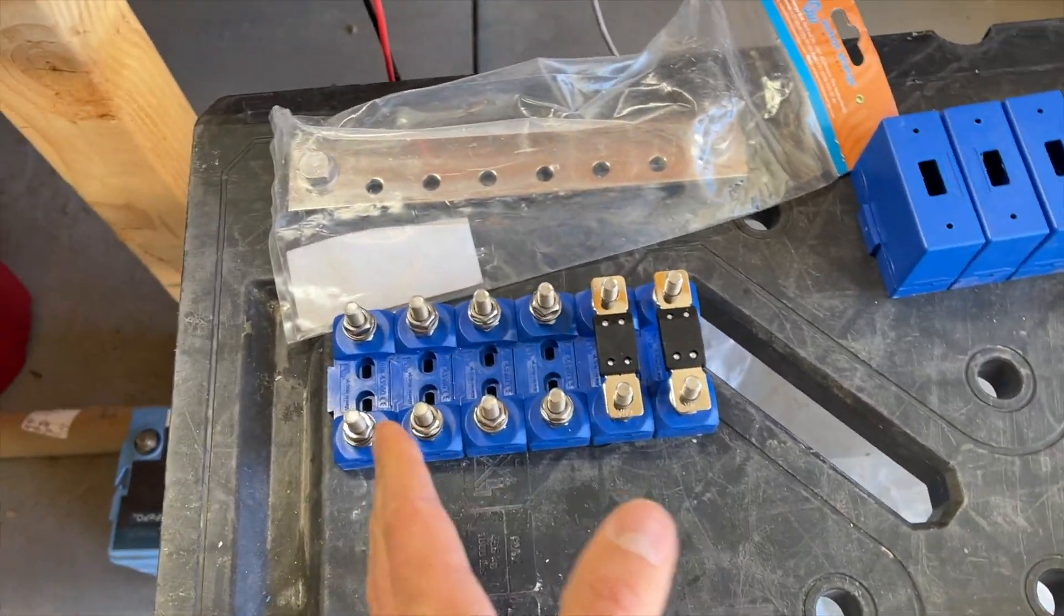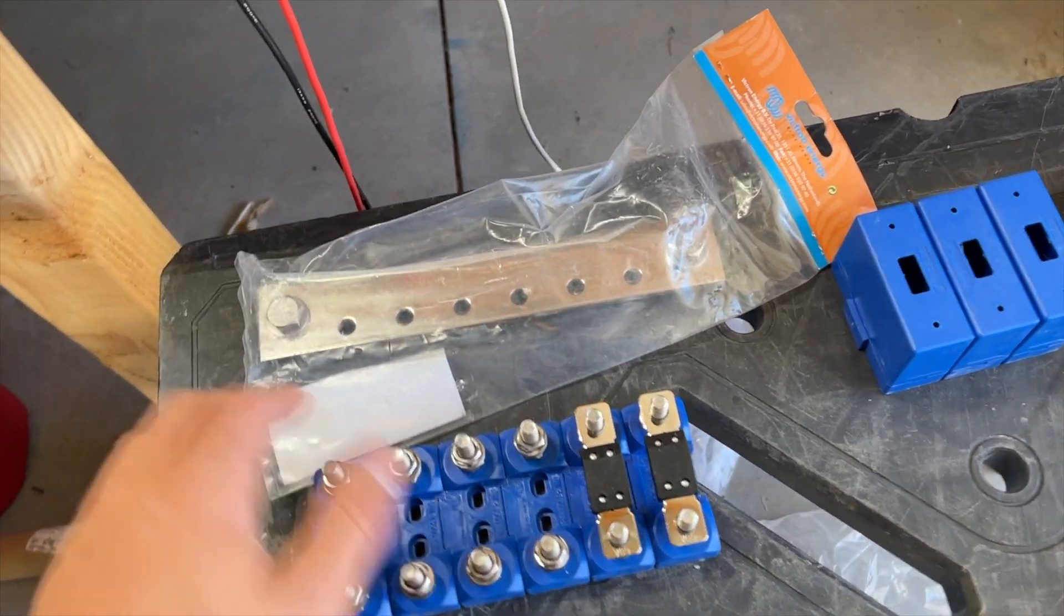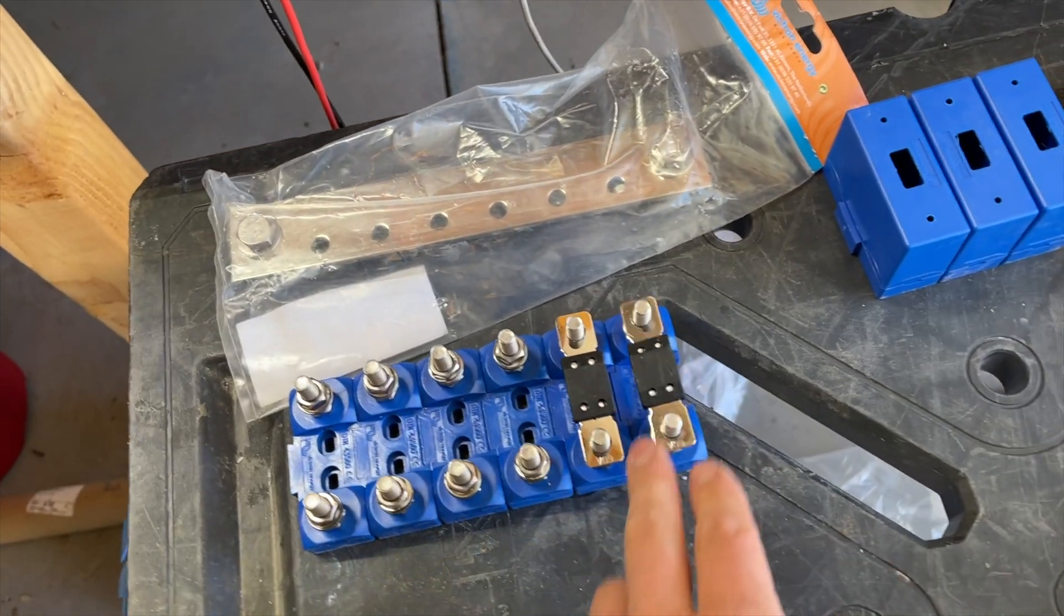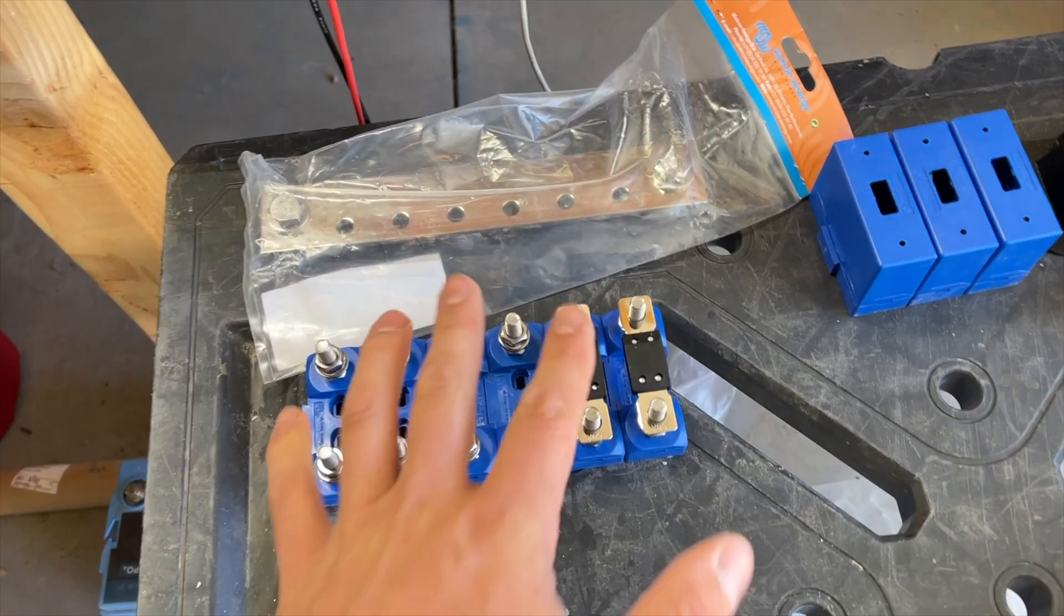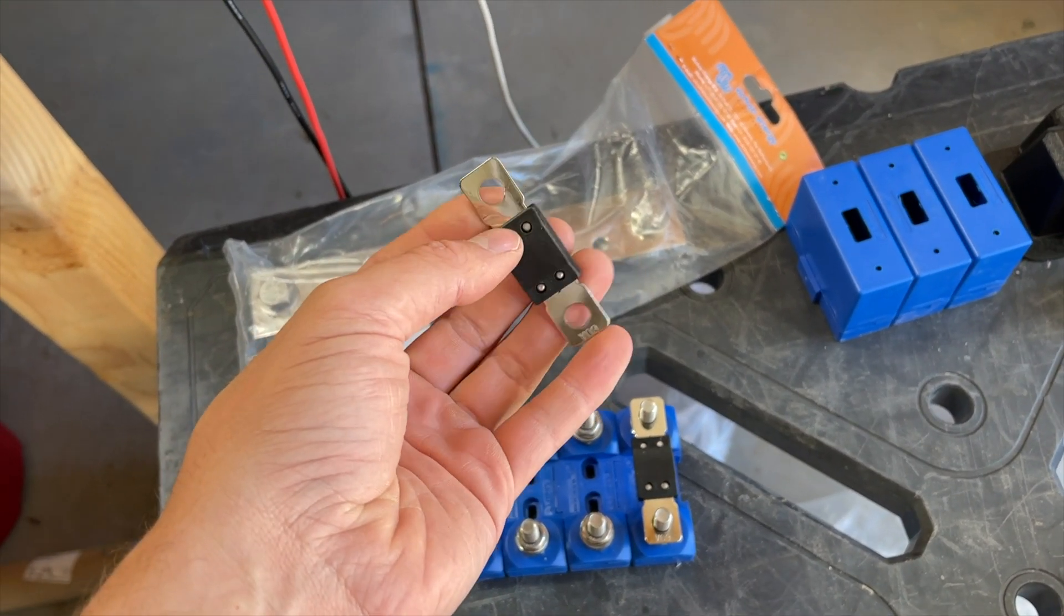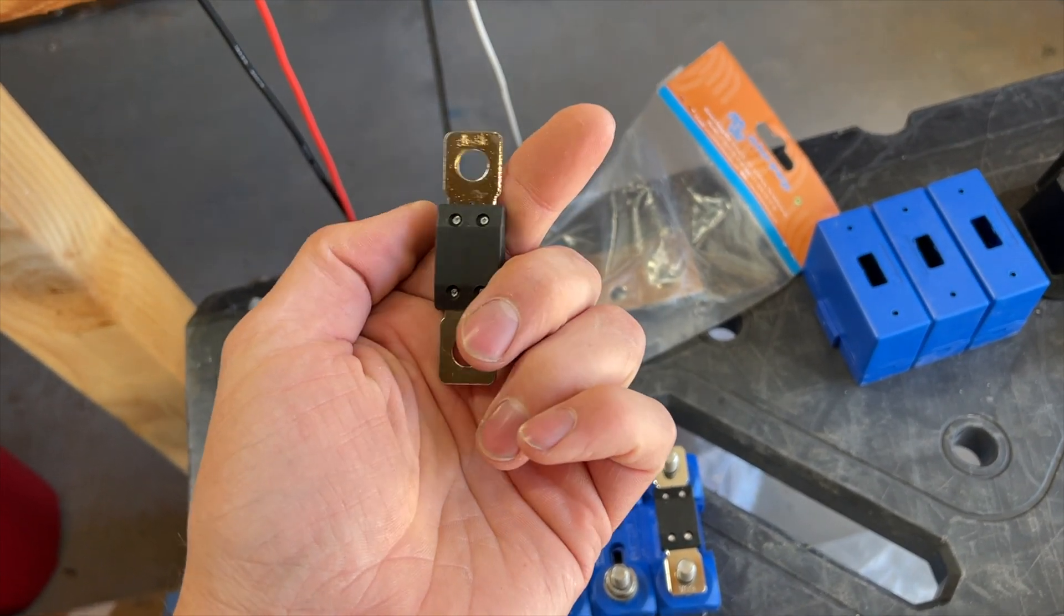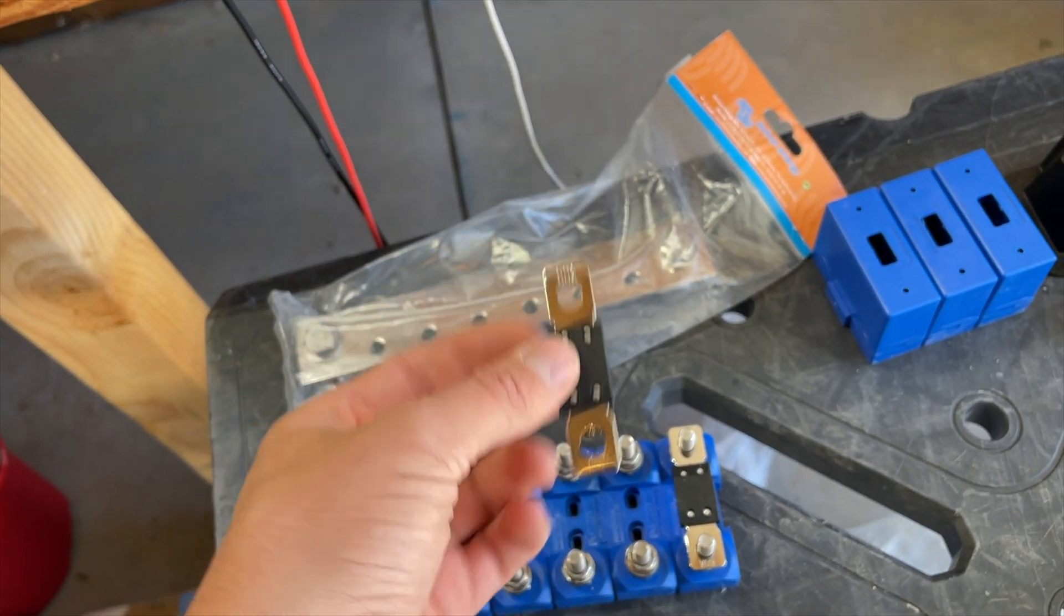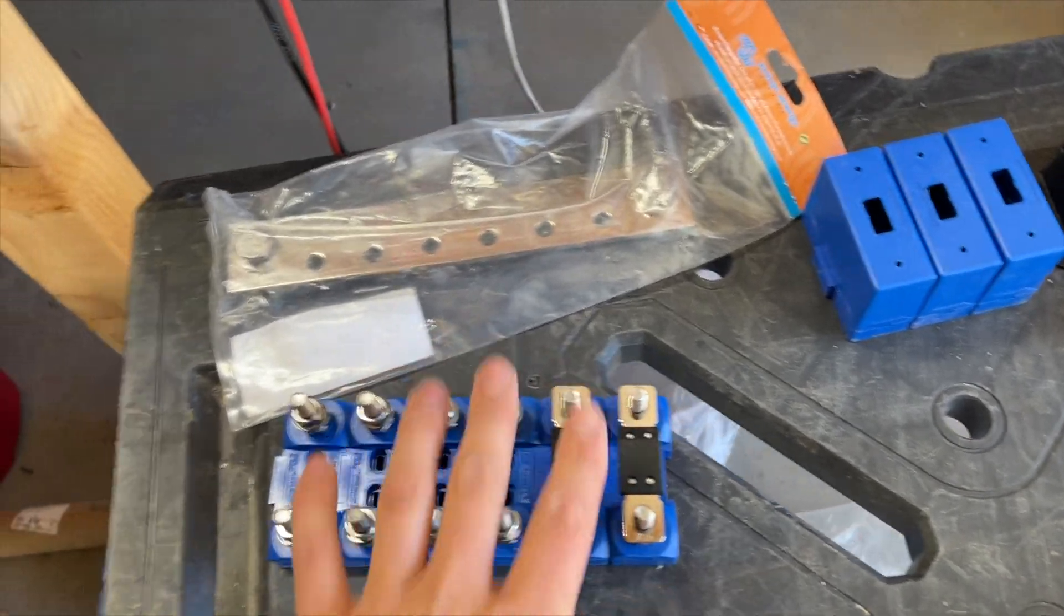So you could have batteries bussed together with fuses on each leg or your batteries could be going to these main terminals. And then this could be your loads coming off of here with the fuses. A lot of ways that this can be worked out. These fuses are available in a wide variety of sizes. This one is a 60 amp, but they go up to 500 amps. And I believe they actually go higher than that if you ever needed. So these are mega fuses.